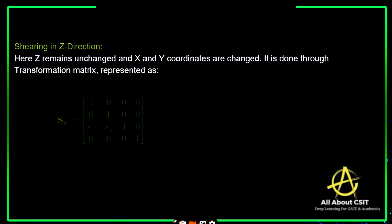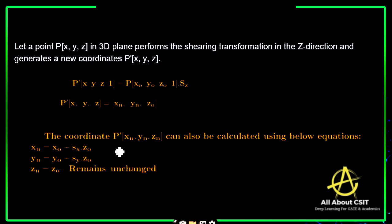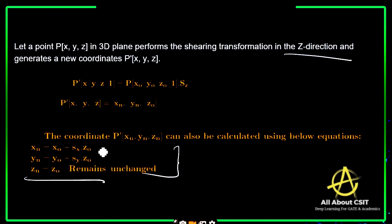For shearing in the Z direction, Z remains unchanged and X and Y coordinates are changed. This is done through the transformation matrix. If you clearly observe, the Sz shearing factor is not there because the Z coordinate remains the same. Whenever it remains the same, it does not require the shearing factor of Z.